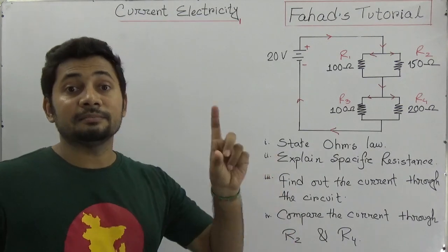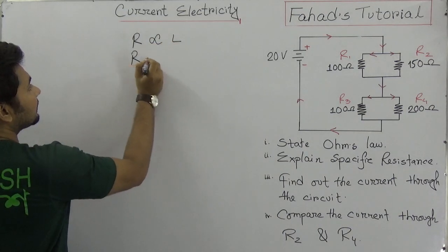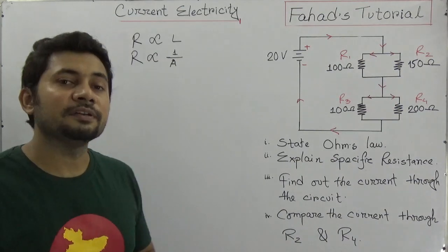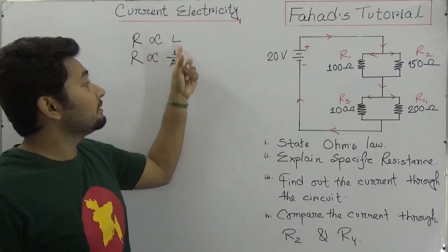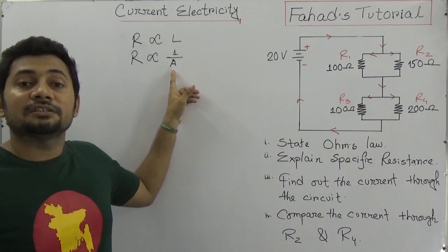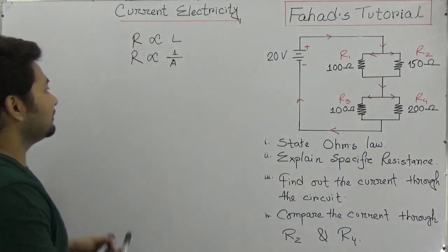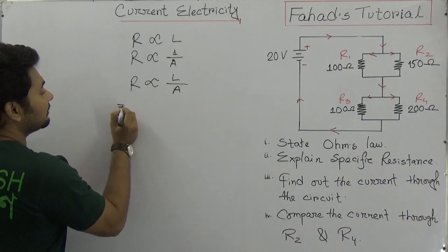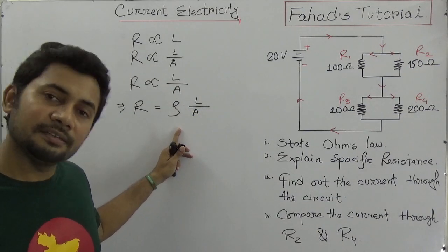The second question is to explain specific resistance. As I explained in my resistance lecture, resistance R is directly proportional to the length L of the conductor, and inversely proportional to its cross-sectional area A. So if there is more length, there is more resistance; if there is more cross-sectional area, there is less resistance. Combining these two relationships, we get R = ρL/A.